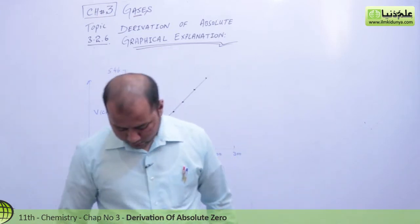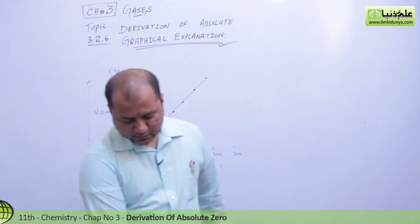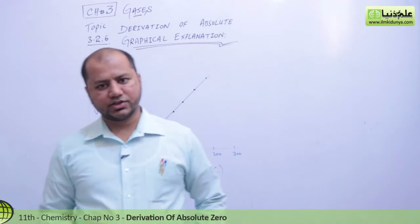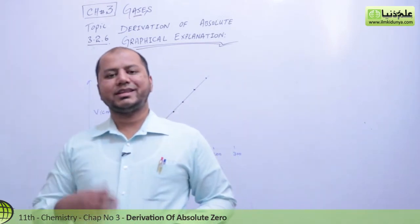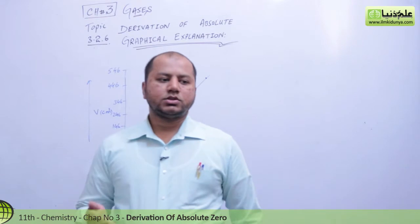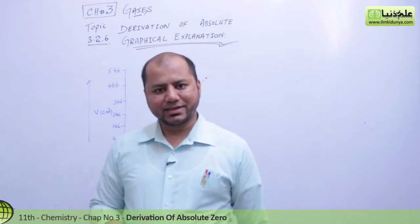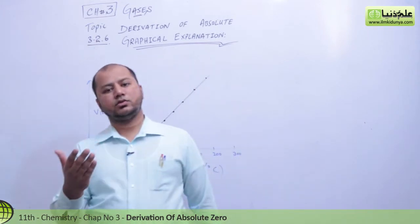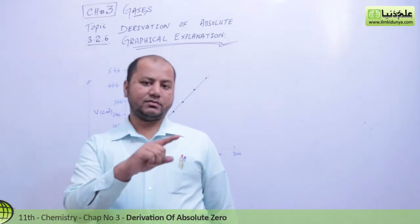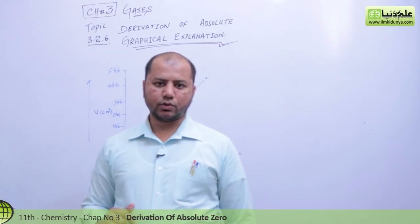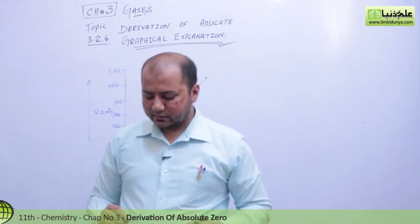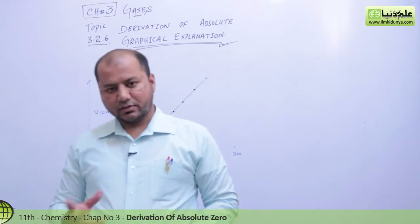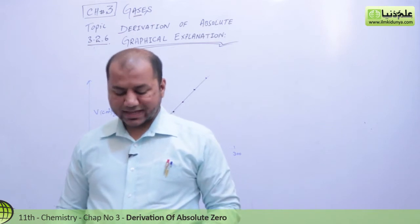Without the Kelvin scale, you cannot sort out examples regarding Charles Law. If you place a temperature in degrees Celsius into the Charles Law formula, you must convert it to the Kelvin scale — this is very important. If you do not convert to Kelvin, the answers will not be correct.